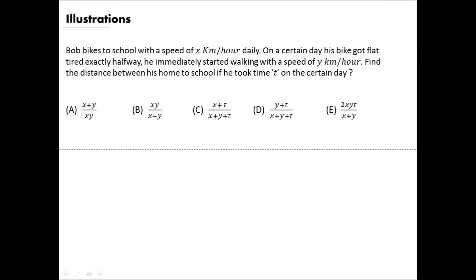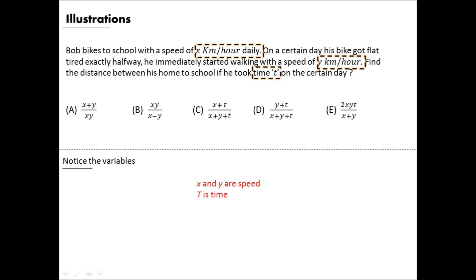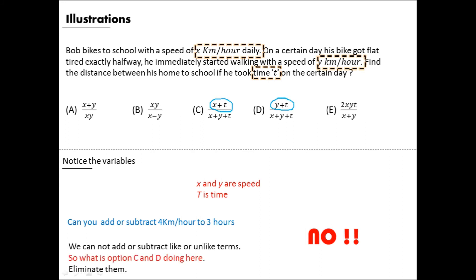Here's the question: Bob bikes to school at x km/h. Halfway there, he gets a flat tire and walks the rest at 5 km/h. Find the distance from home to school if the total trip took time t. We have speeds x and 5 (or y) and time t. Since speed and time cannot be added, any option that adds a speed to a time is invalid. Options C and D do exactly that — eliminate them immediately. We're left with A, B, and E.